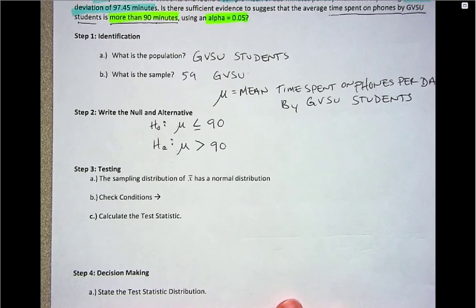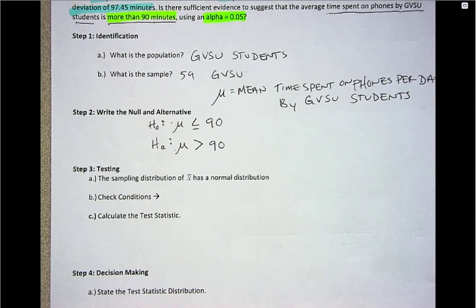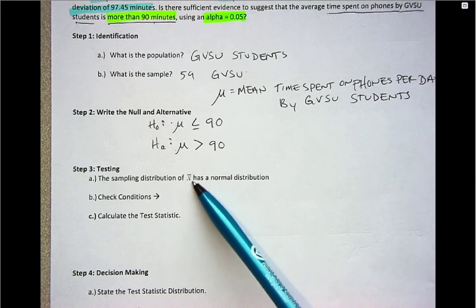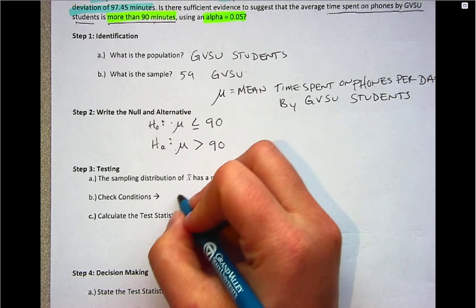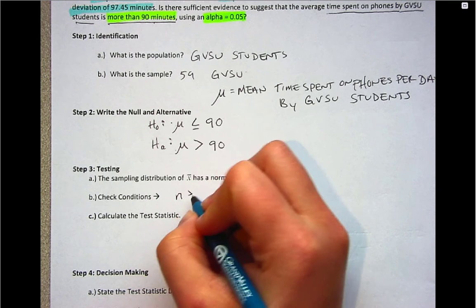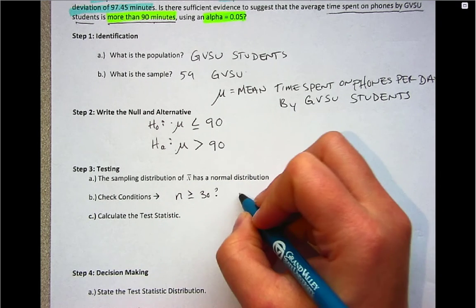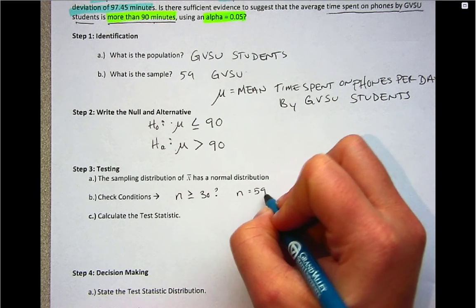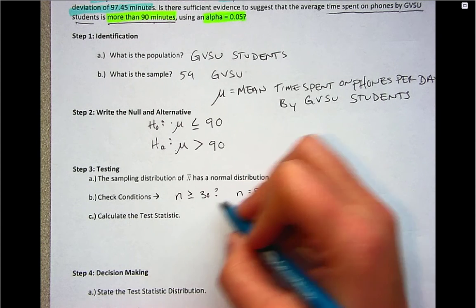So then we're going to do testing in step three. As a reminder, our assumption is that the sampling distribution of X bar has a normal distribution. And to verify that assumption, we have to either check sample size, or we have to check that the original population is bell-shaped.